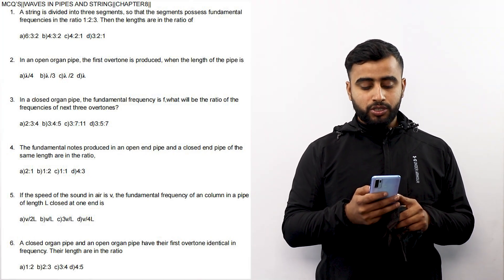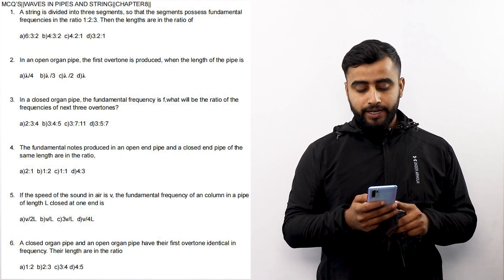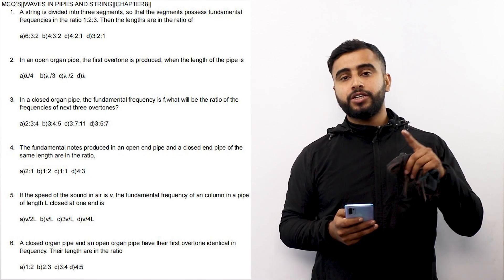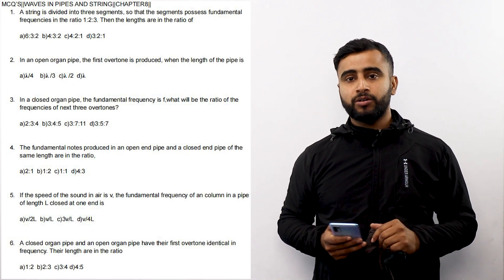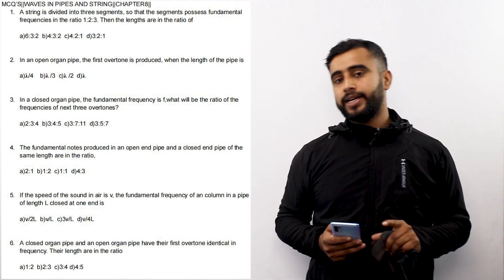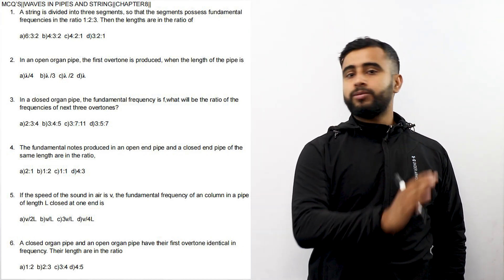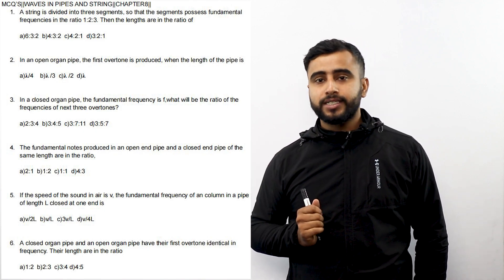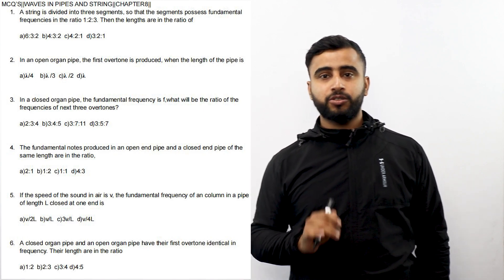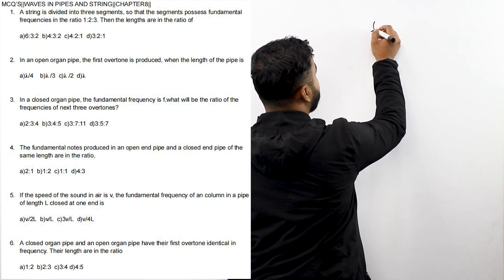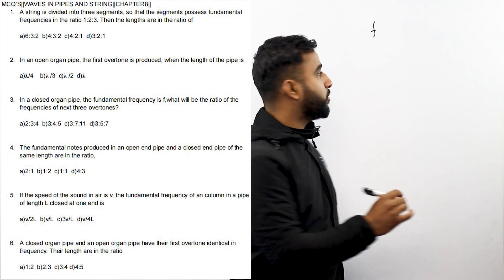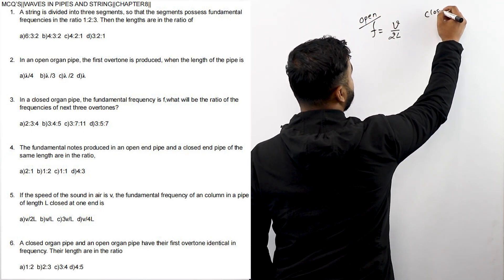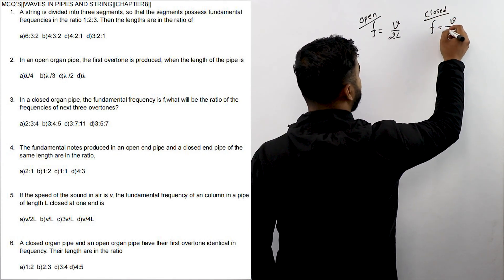Question number 6: A closed organ pipe and an open organ pipe have their first overtone identical. Their lengths are in what ratio? We need to calculate the ratio of lengths. The first overtone frequency of an open organ pipe equals V divided by 2L, and for a closed organ pipe it also equals V divided by 2L.